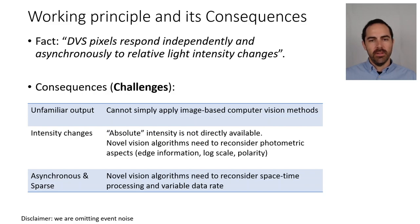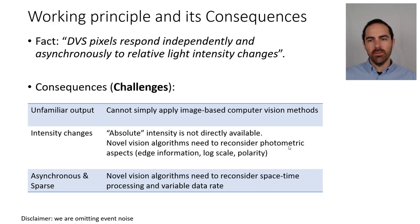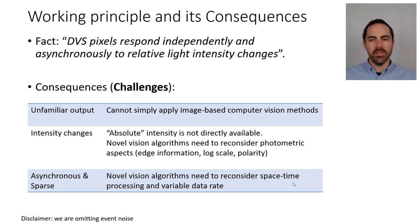The other challenge is that the output is asynchronous and sparse, which means that novel vision algorithms need to reconsider the space-time processing and variable data rate of these sensors. So basically, there are two things to reconsider: one is the photometric aspects, because we have intensity changes rather than absolute intensity; and the other is the space-time output aspect, because we don't have a sequence of images — we have a sparse stream of events.